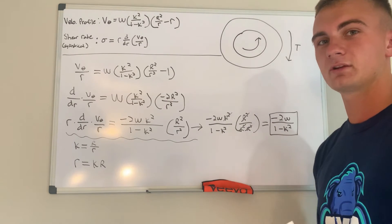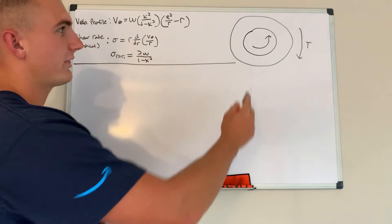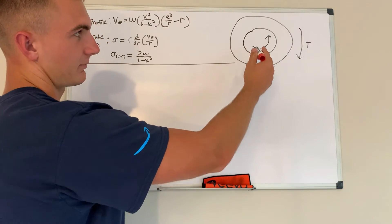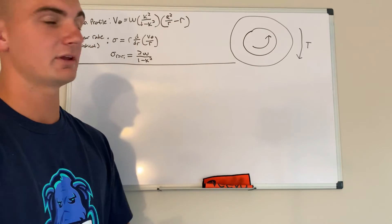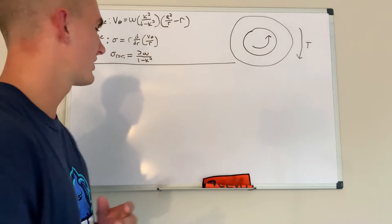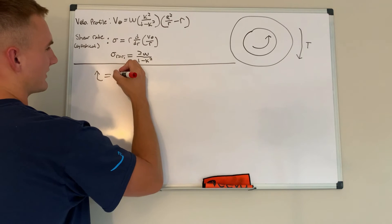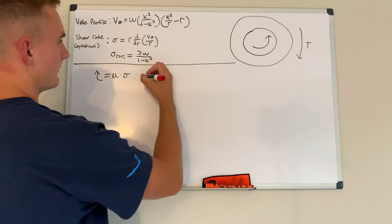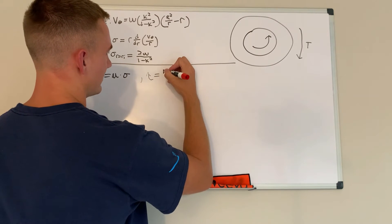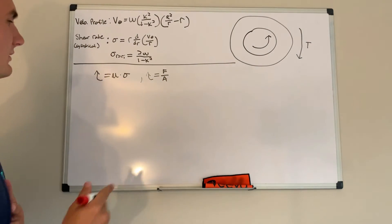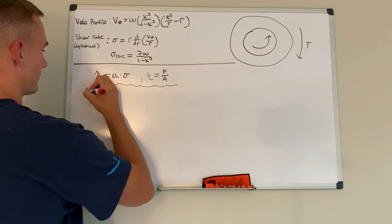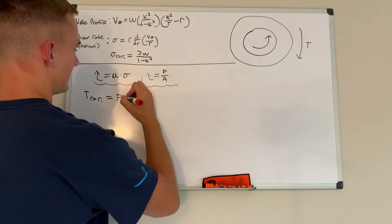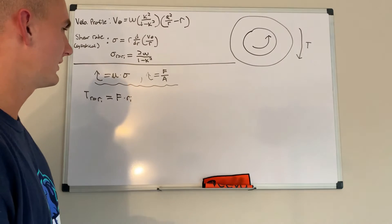To calculate the torque for the inner cylinder, we know that torque equals force multiplied by the lever arm. In our case the lever arm is the inner radius. We also know from Newton's law of viscosity that shear stress equals viscosity times the shear rate. And we know that shear stress also equals force divided by area.